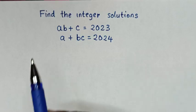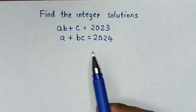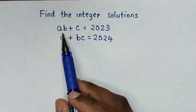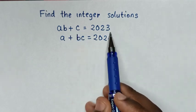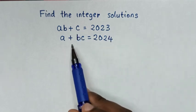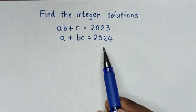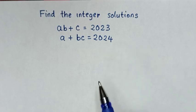Hello. How to find all solutions of AB plus C is equal to 2023, and A plus BC is equal to 2024.